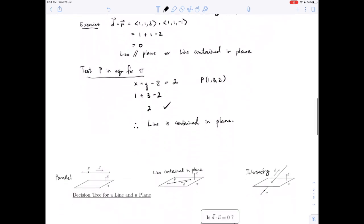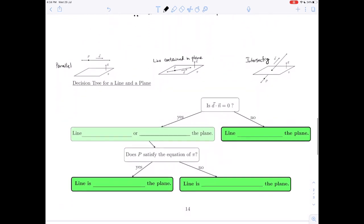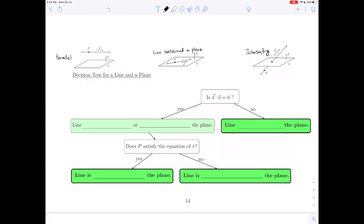So let's go and look here at a flowchart, a decision tree for what we just did. The first thing that we did was we checked the dot product: is d dot n equals 0? We answered yes, which means that the line is parallel to or the line is contained in the plane. If we had answered no, we would have had our final answer for that situation. The line would have been intersecting the plane.